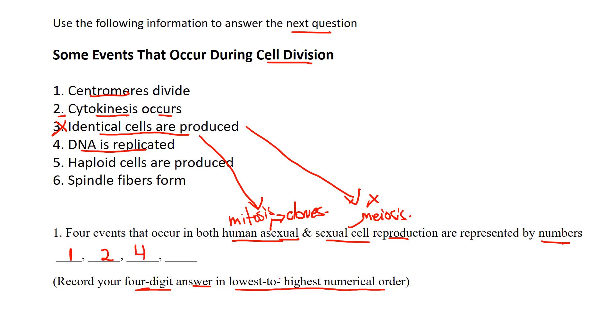Haploid cells are produced - well, that happens in meiosis, we're going to get haploid cells, but certainly doesn't happen in mitosis. We're going to produce diploid cells. So that doesn't happen in both - happens in one but not the other.